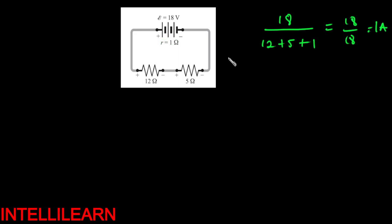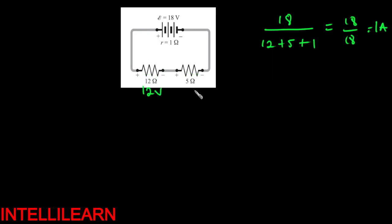So the total current is 1 ampere — that means the current coming out goes into each resistor. So you can find the voltages. The voltage of the 12 ohm will be IR: 1 times 12, which is 12 volts. And the voltage of the 5 ohm is 5 times 1, which is 5 volts.